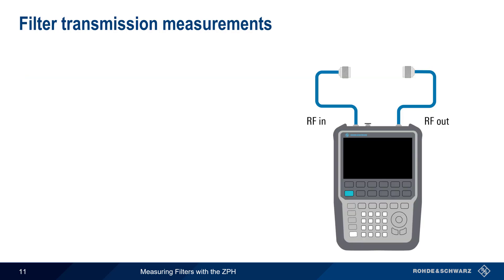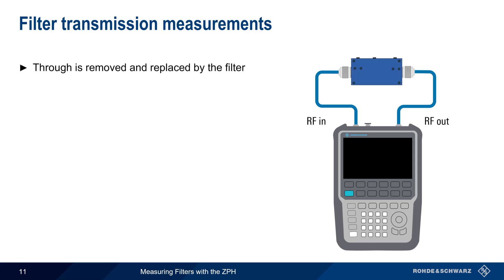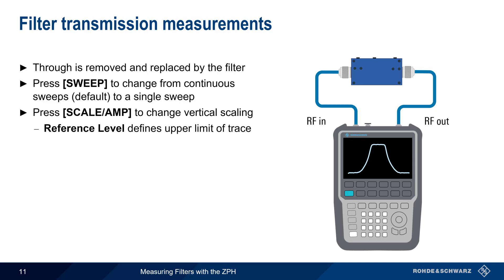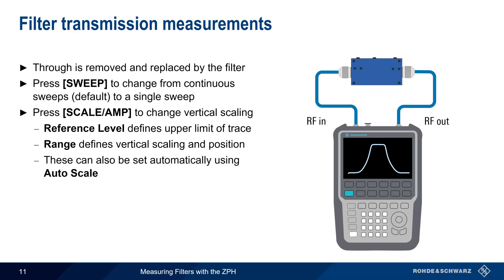After normalization, we are ready to make measurements. The through that was used for normalization is removed and replaced by the filter under test. By default, the ZPH will sweep and update measurement results continuously, but this can be changed to a single sweep by pressing the Sweep hard key. The vertical scaling can be adjusted using the Amplitude hard key. Reference Level is used to define the upper limit of a trace, and Range Position is used to scale the trace vertically and to move the trace up and down. Note that the ZPH also has an Auto Scale key that can adjust these values automatically.